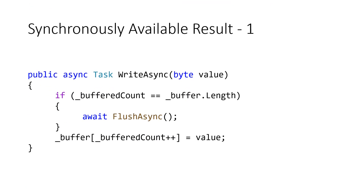The first way results are available is synchronously. Look at this method WriteAsync — a byte value is going to be written into the buffer. First we check if the buffer count equals the buffer length, meaning the buffer needs to be flushed. But most of the time this condition will evaluate to false, so we end up at the next line assigning the value to the buffer. This is called a hot path.